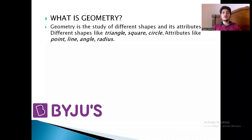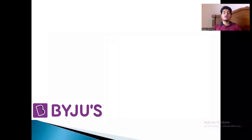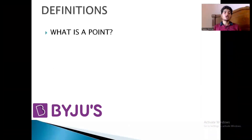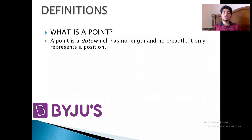So geometry is nothing but the study of different shapes and their attributes. Moving ahead, in order to understand geometry better, we must have some idea about the basic definitions used in geometry. We will begin with a point. A geometrical point is a dot which has no length and no breadth — it only represents a position.